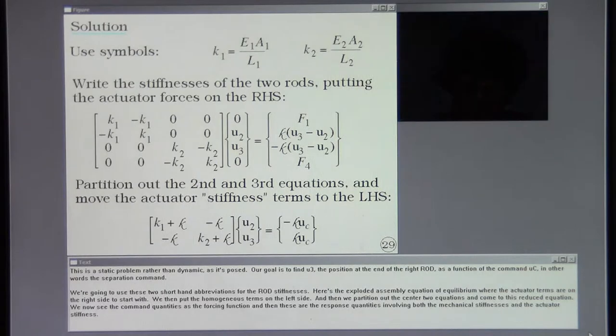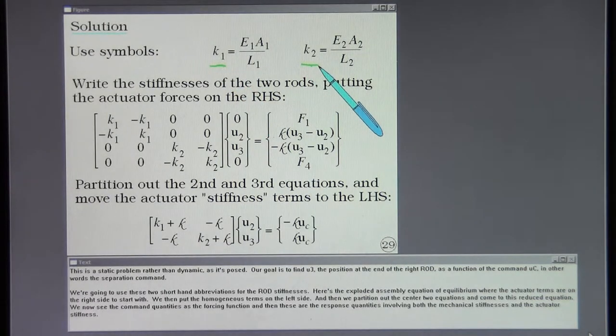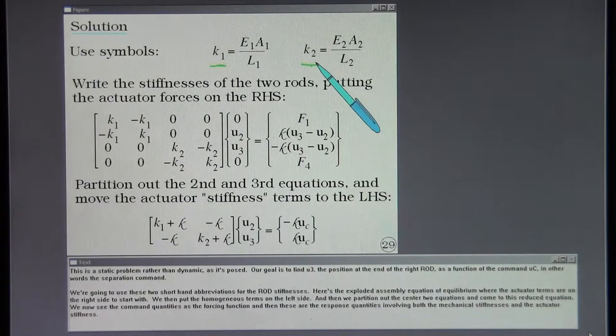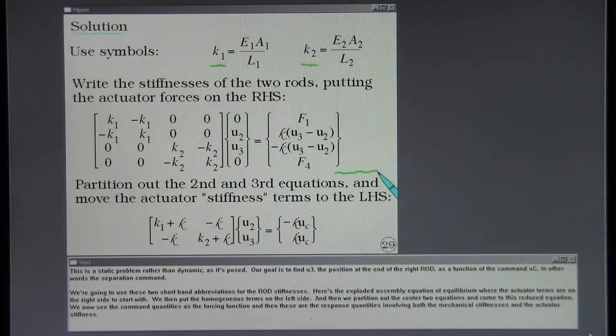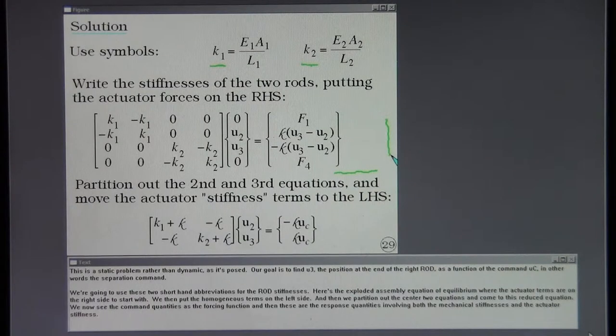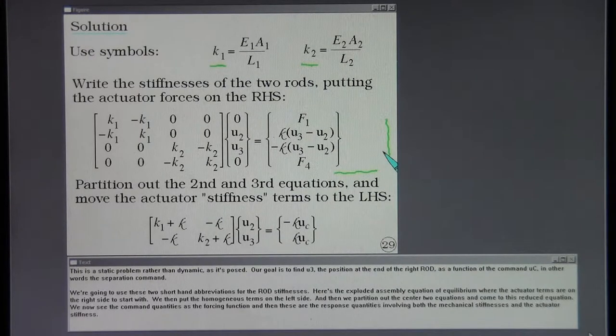We're going to use these two shorthand abbreviations for the rod stiffnesses. Here's the exploded assembly equation of equilibrium where the actuator terms are on the right side to start with. We then put the homogeneous terms on the left side and partition out the center two equations and come to this reduced equation. We now see the command quantities as the forcing function and these are the response quantities involving both the mechanical stiffnesses and the actuator stiffness.